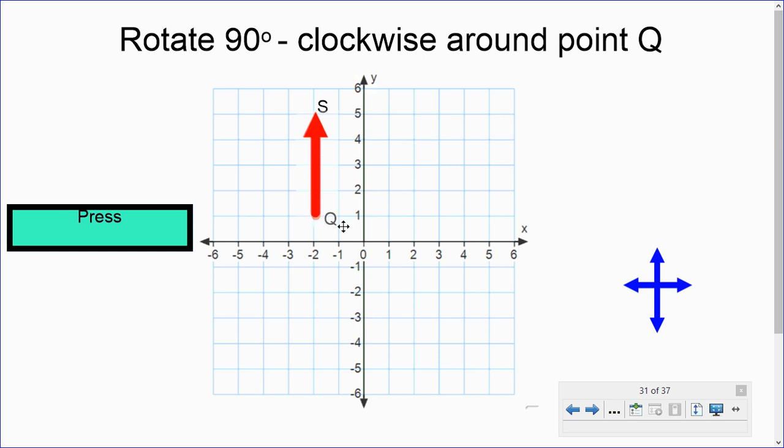So we're going to rotate it around point Q. Point Q is down here, so in a sense, point Q becomes our new center of origin. And we're going to take this vector and rotate it 90 degrees clockwise. And if you remember, the clockwise is to the right, so I'm going to take it and turn it 90 degrees, and now I'm going to place it at the origin.